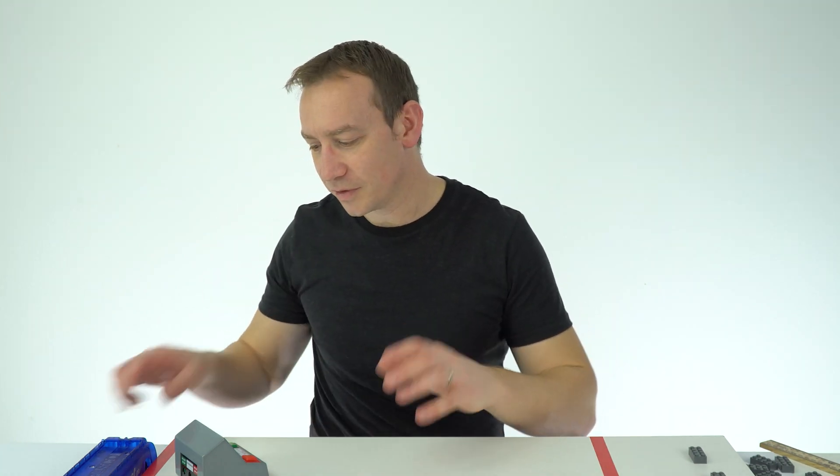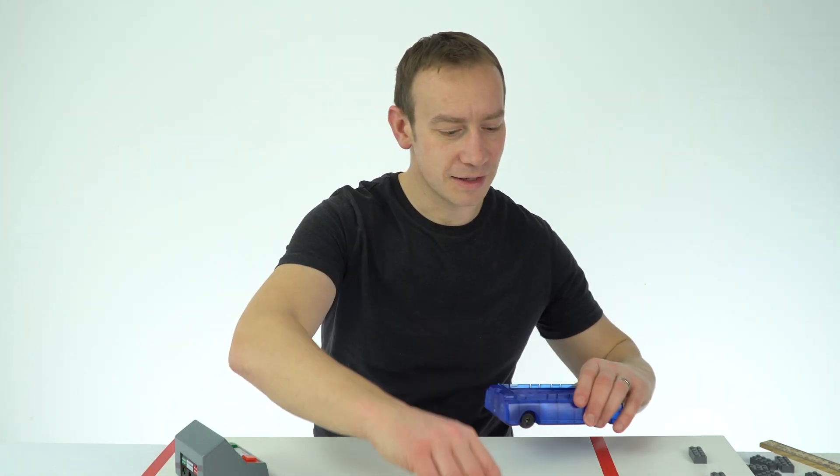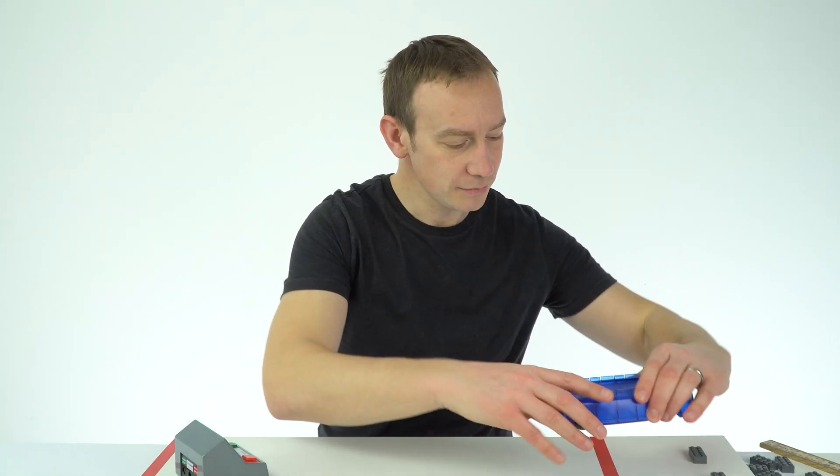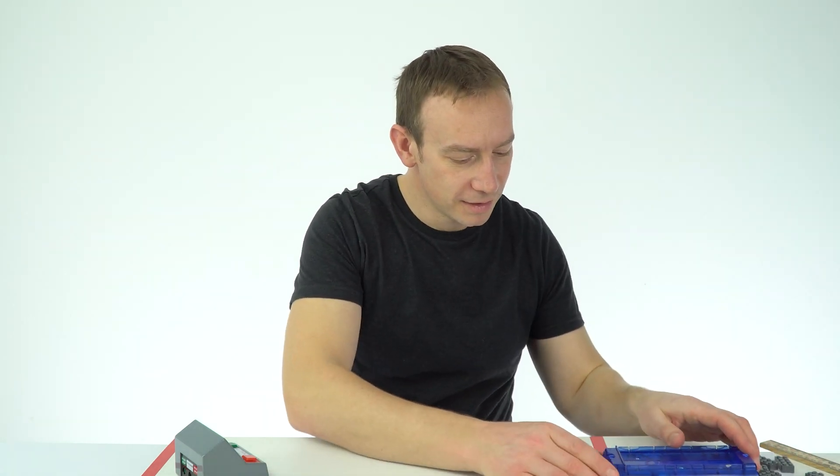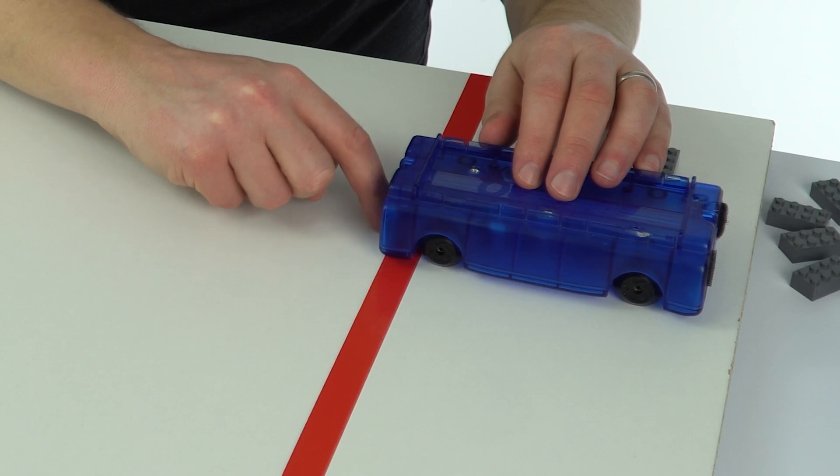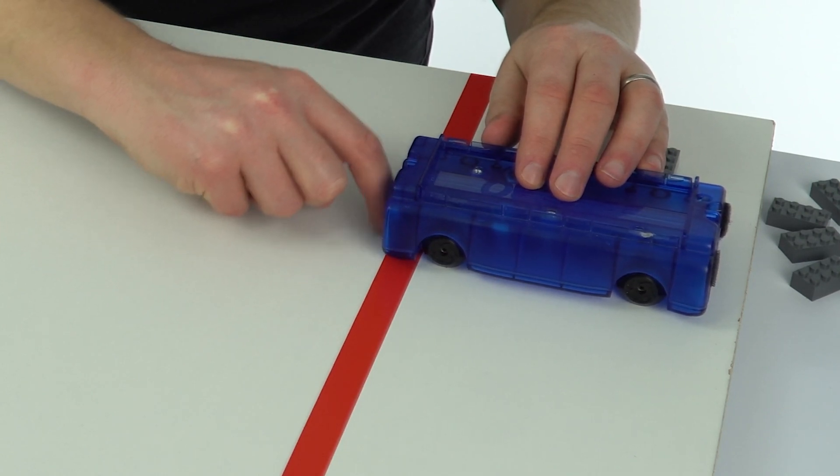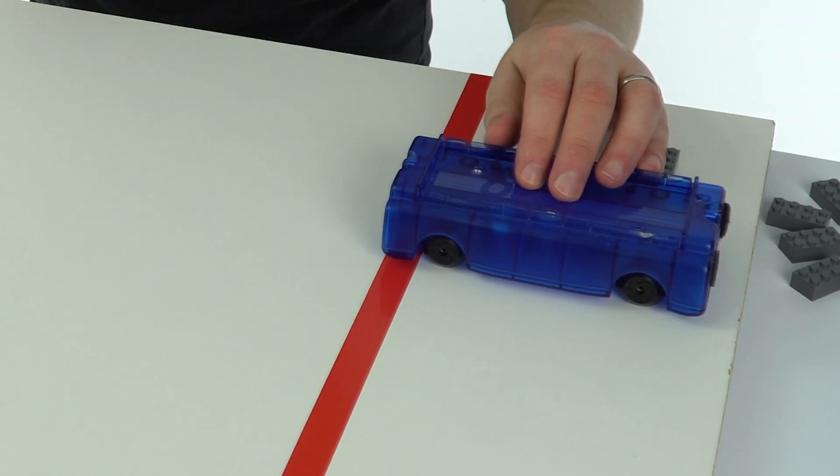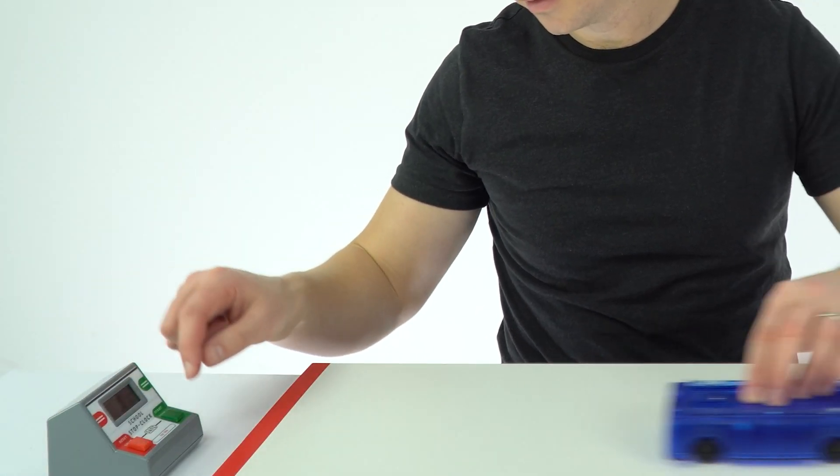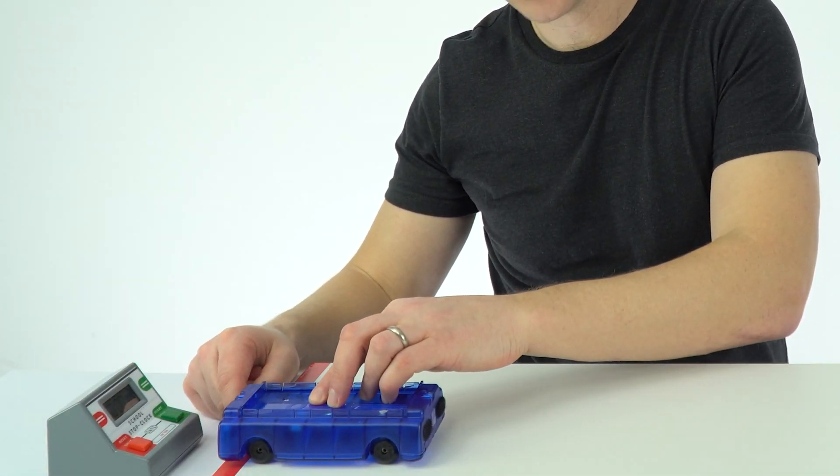We've got a starting height, we've got a distance, we've got the trolley, so we can now start to take some data. For this first one I'm going to make sure that the front of the cart is in line with the front of the piece of red over here, and I'm going to stop it as soon as it gets to this point here.